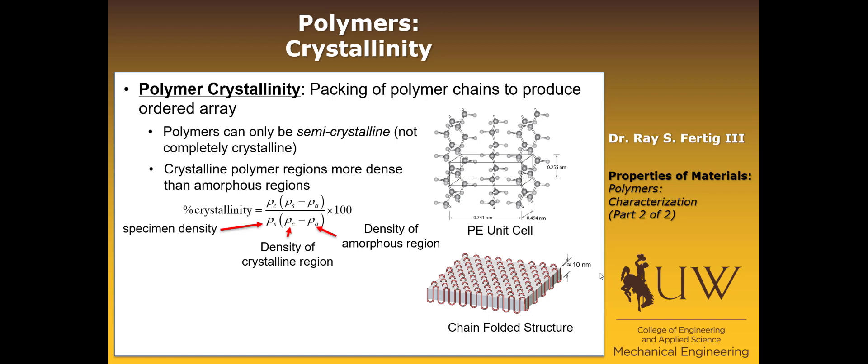So that's how we compute crystallinity, but it's something that's a little bit different than what we're used to, because when we have a metal, it's 100% crystalline, whereas a polymer won't be.